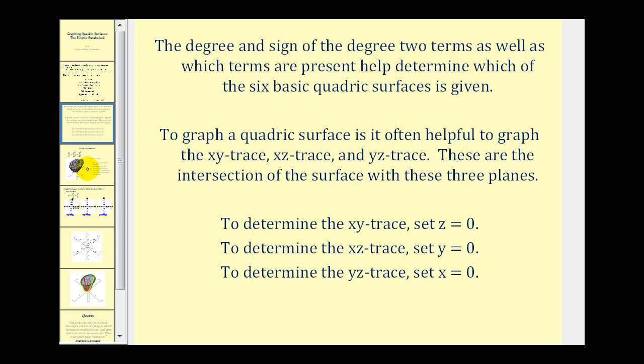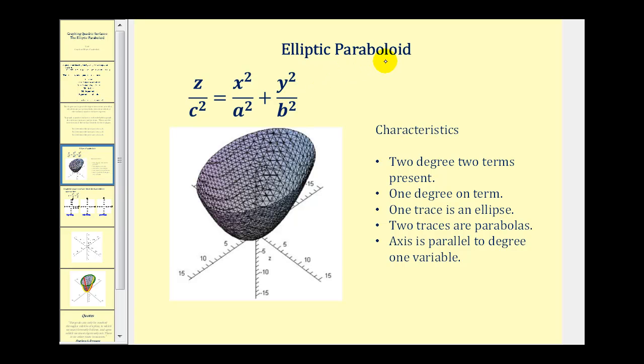Let's take a look at the form of an equation that produces an elliptical paraboloid. Notice there are two degree two terms present and one degree one term. Also, if this equation was set equal to zero, the linear term would be negative. One trace will be an ellipse and two traces will be parabolas. And the axis will be parallel to the degree one variable.